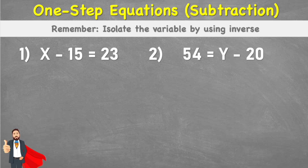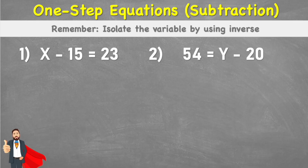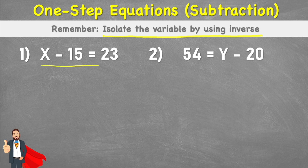Welcome back to the Maths Guide. Today we are looking at how to solve one-step equations which involve subtraction. We must isolate the variable by using the inverse. Let's look at the first question: x subtract 15 equals 23.